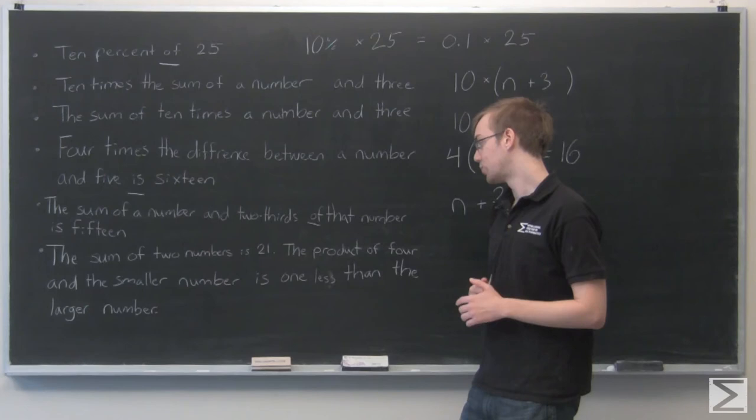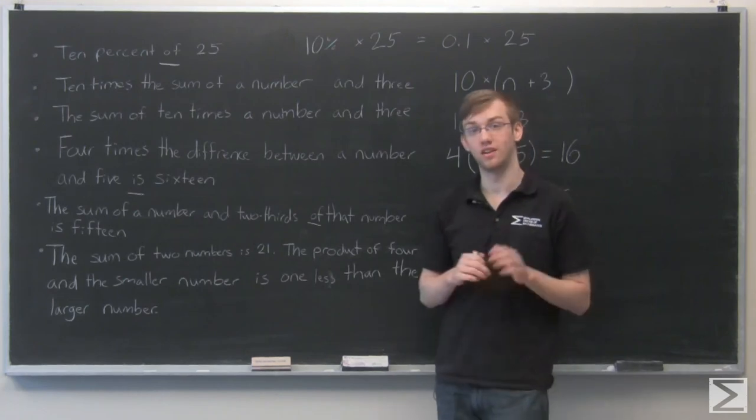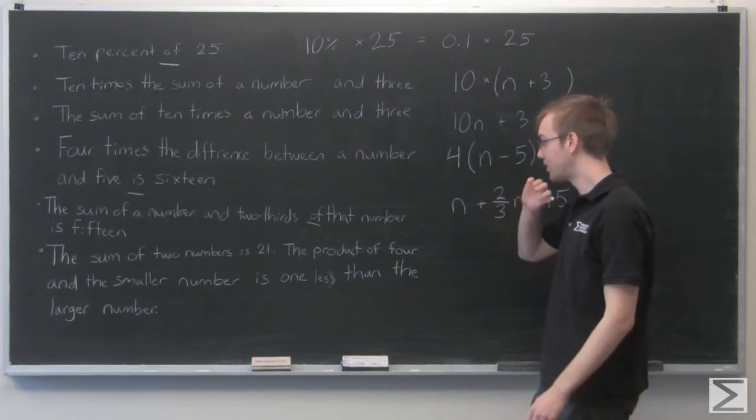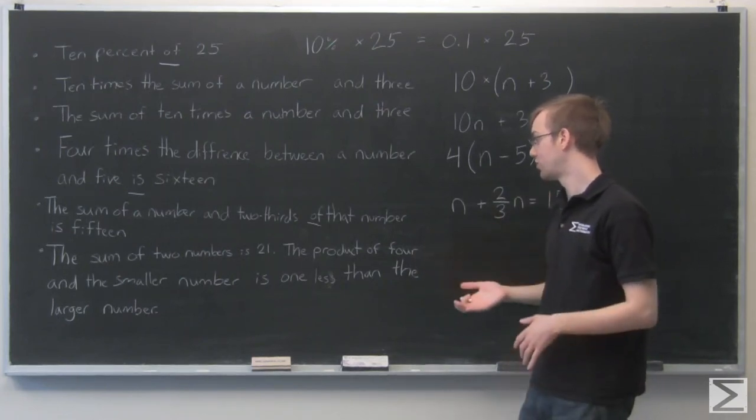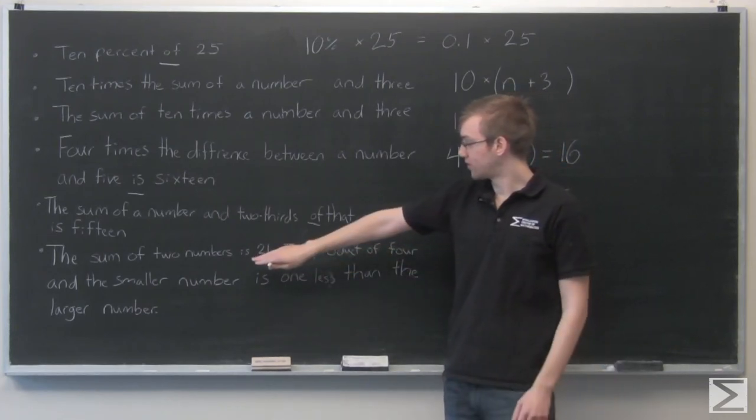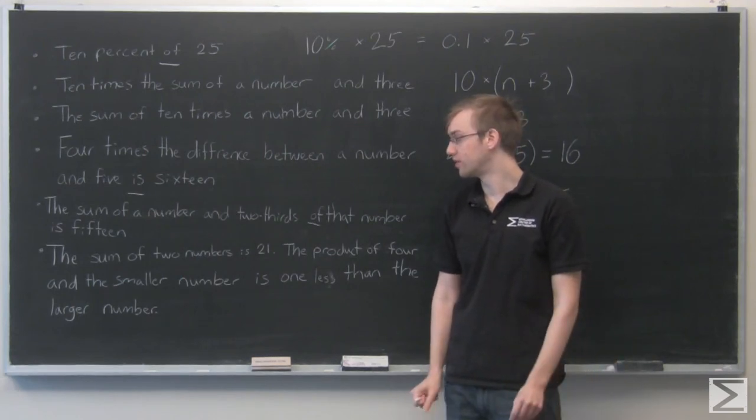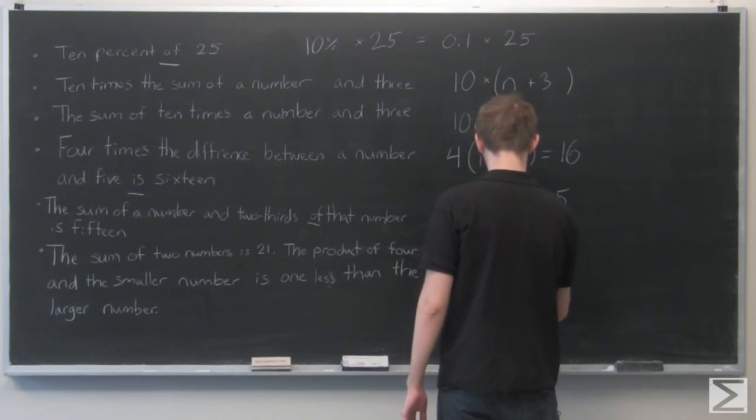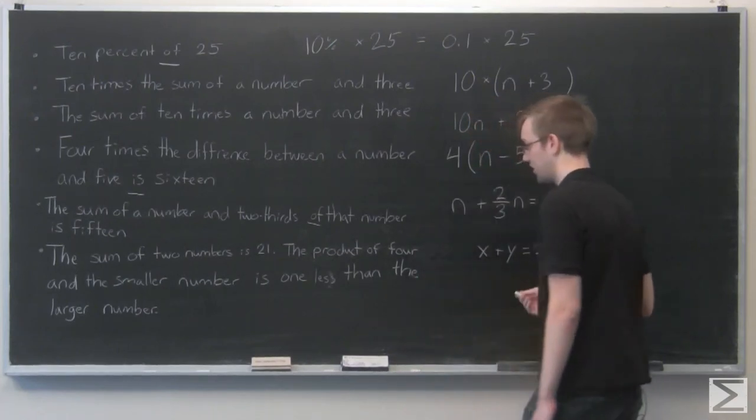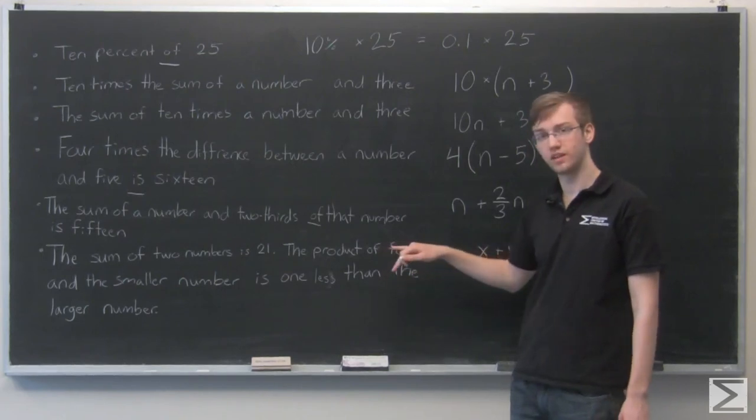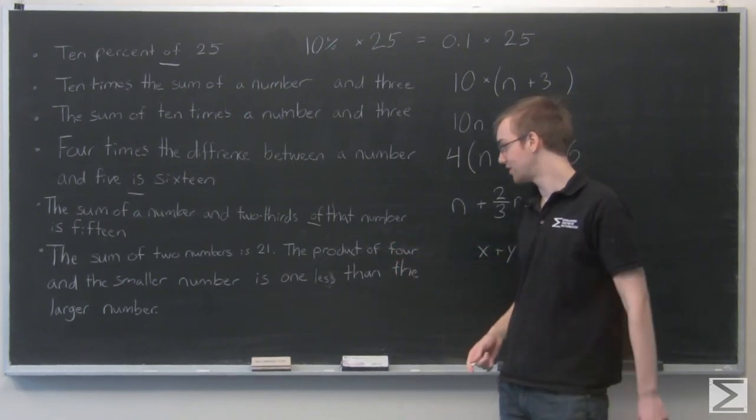Last one: The sum of two numbers is 21. The product of four and the smaller number is one less than the larger number. It sounds like there's two equations in this one because there's two sentences. Already I'm a bit nervous because we're talking about the larger number and the smaller number. Let's start with the first sentence: The sum of two numbers is 21. Let's just call them x and y. That sounds fairly simple to write down. Now we think, does it matter which number is the smaller number and which one's the larger number? As long as we get our quantity straight, it should all work itself out.